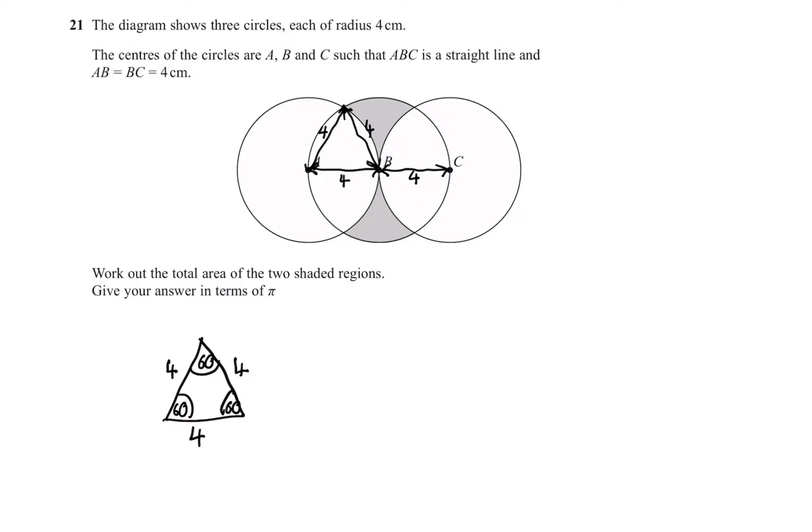So how could we find the shaded region? We can find this shaded area by turning this into one sector. Now, to get the area of this sector, the shaded region, we're going to do the area of the whole sector, take away these two smaller segments.